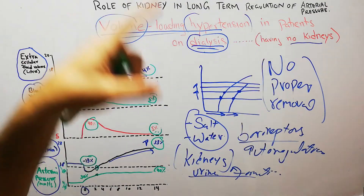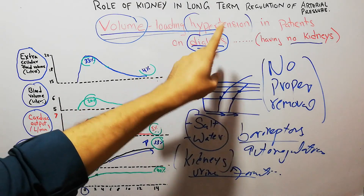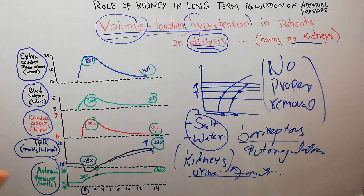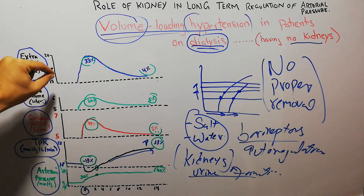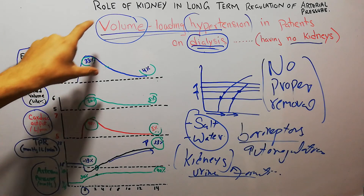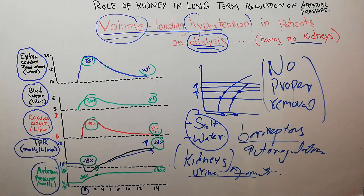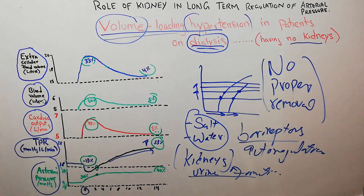The sequence of volume loading hypertension in patients dependent on dialysis or with no functional kidneys is the same as the normal sequence previously discussed. That's all about volume loading hypertension in patients on dialysis. Thanks for watching.